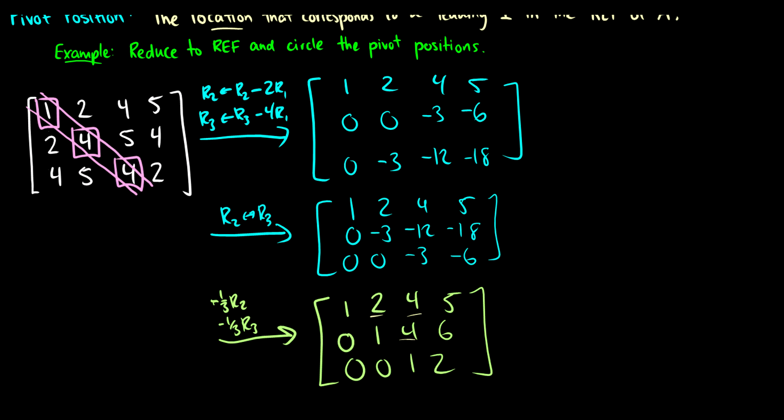We can actually talk about the properties of a matrix just given the pivot positions. We know that x1, x2, and x3 will have explicit values on the right. We know x1 is going to be something, x2 is going to be something, and x3 is going to be something, because we have three rows with this diagonal pivot position.